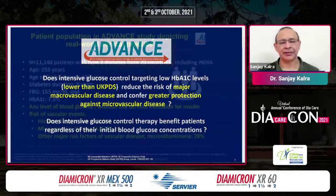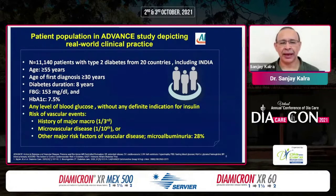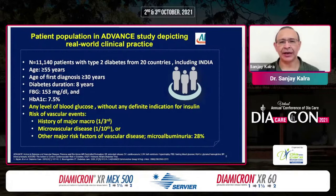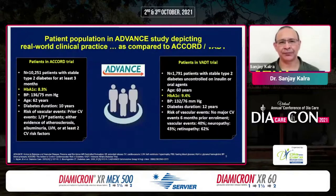The persons recruited for ADVANCE reflected real-world clinical practice. Twenty countries participated, including India. Our lead investigator was Dr. Nikhil Tandon from AIIMS, New Delhi. Patients were included as long as diabetes was diagnosed after age 30, the patient was aged 55 or more, and any level of blood glucose was allowed, provided there was no need for insulin. One-third had macrovascular disease, one-tenth had microvascular disease, and 28% had other risk factors including microalbuminuria. The average HbA1c was 7.5.